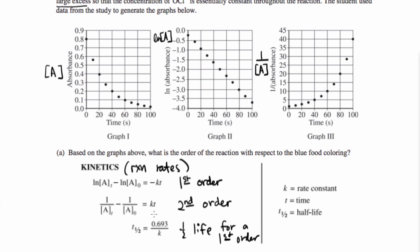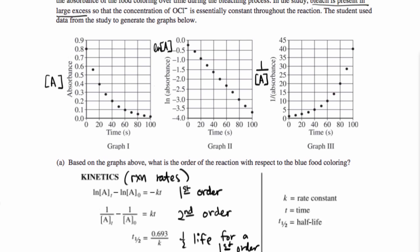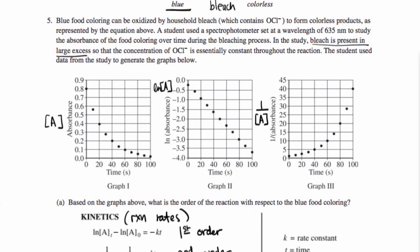And the important thing to remember here, which will come up again in a second, is that this is a constant. Because k is a constant, so our half-life is also a constant for a first order reaction. So that's the information we have.